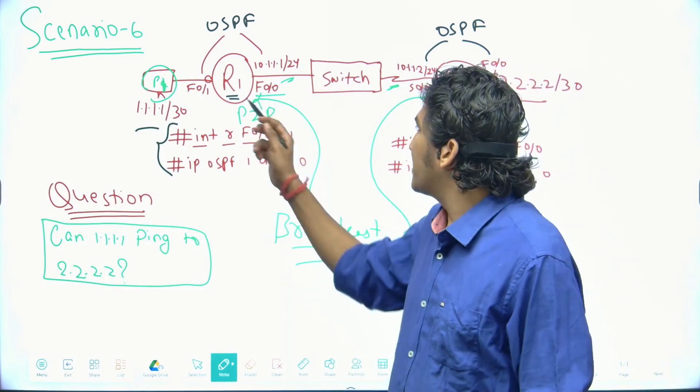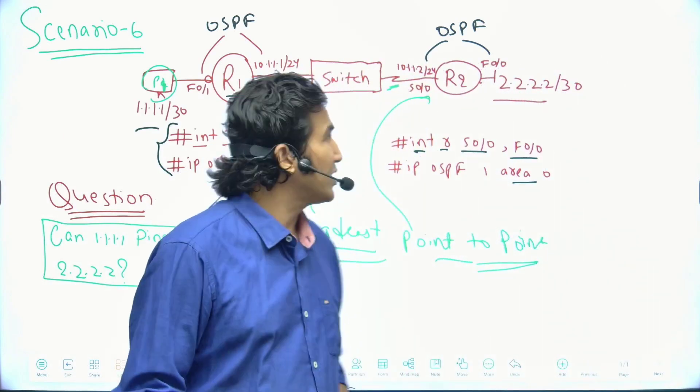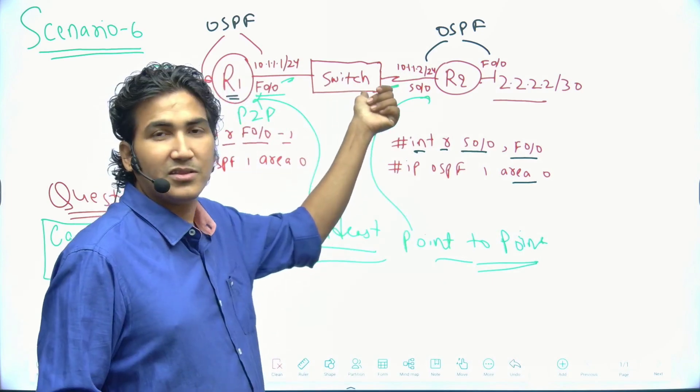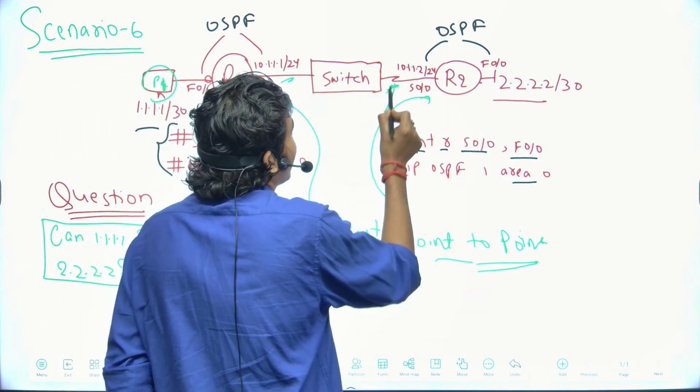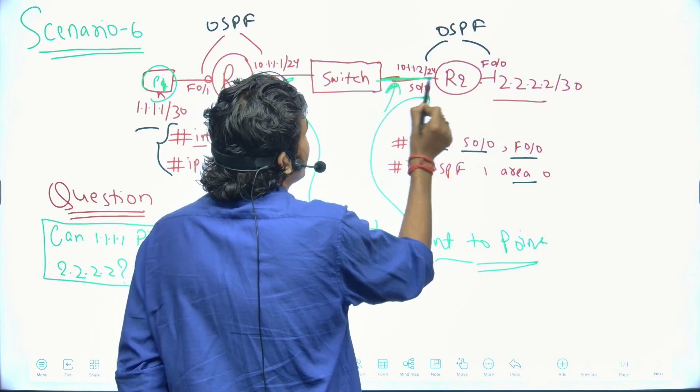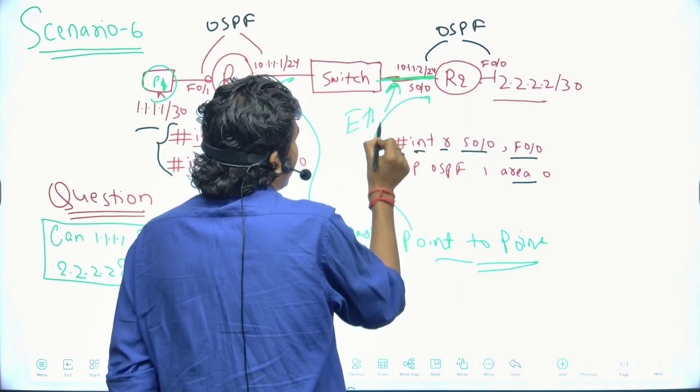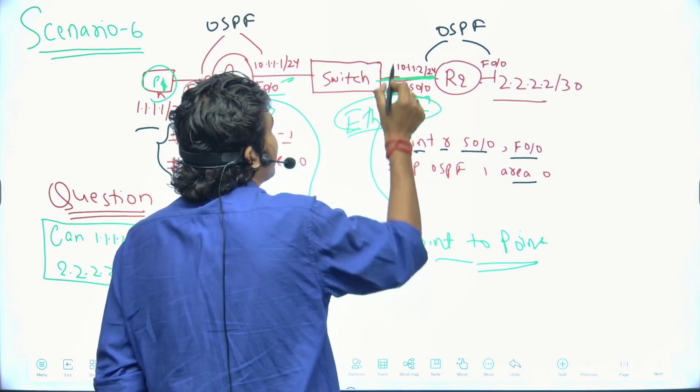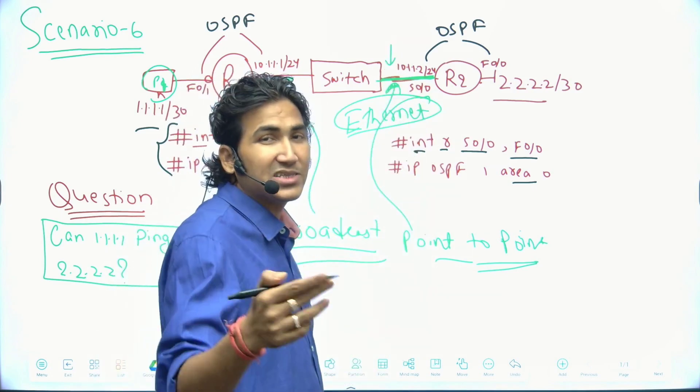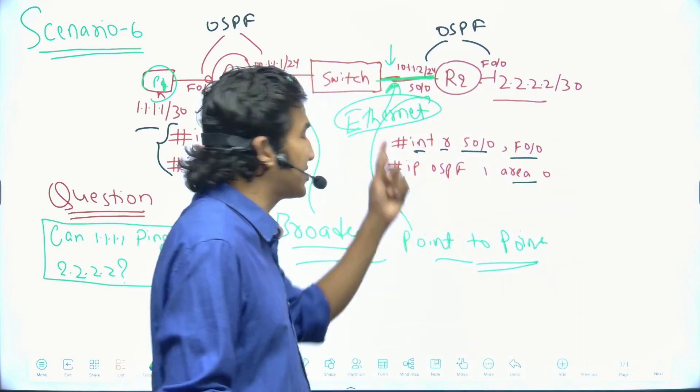And guys, between the routers, OSPF network type should be point-to-point only. But as here the device is a switch, right? So this is incorrect. Here the cable should be broadcast-like Ethernet. Here we should replace the cable with Ethernet, right? In the multi-access network, we will be using Ethernet cable, not point-to-point cable. So serial is a point-to-point cable, okay?